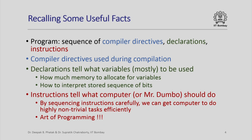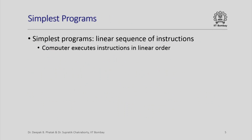By sequencing instructions in a careful and intelligent manner, we can get a computer or Mr. Dumbo to do highly non-trivial tasks in an efficient way. This is all what the art of programming is about — to make instructions execute in the right sequence so that we can achieve non-trivial tasks in a simple and efficient way.